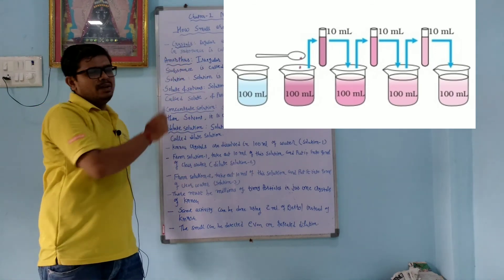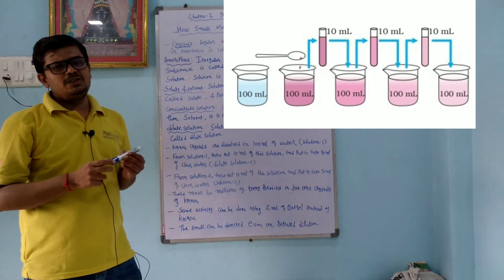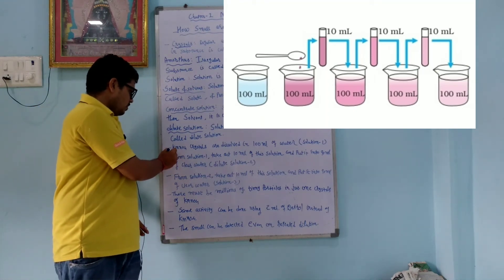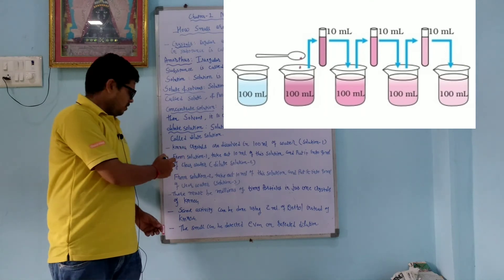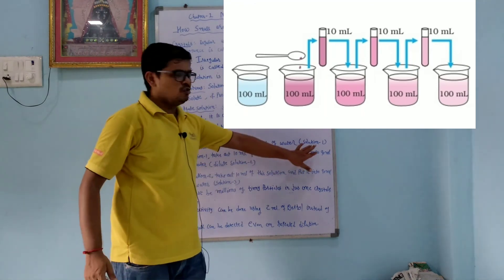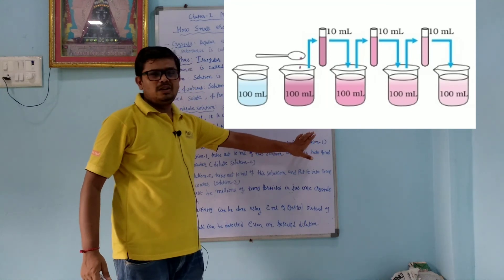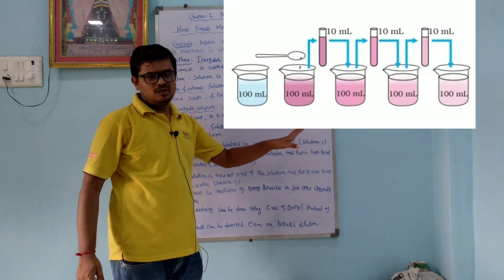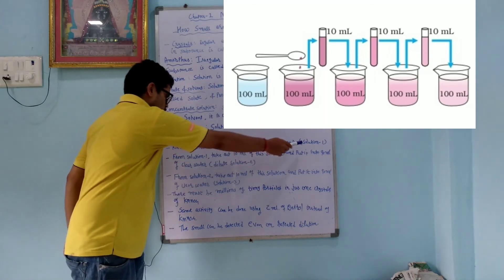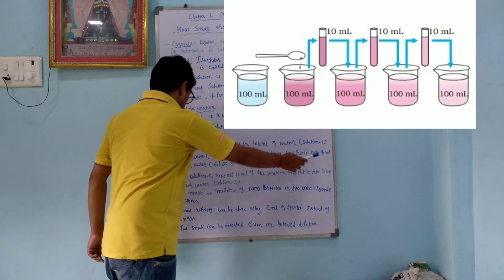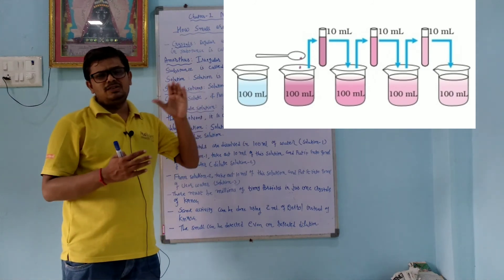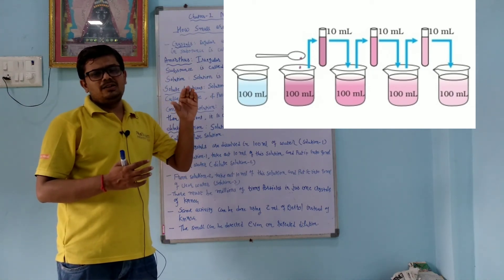To learn how small particles of matter are, we use potassium permanganate (KMnO₄). Dissolve two or three crystals in 100 ml of water to get Solution 1, which appears dark pink. Then take 10 ml of Solution 1 and add it to 90 ml of clear water to get Solution 2. Comparing them, Solution 1 is darker than Solution 2.